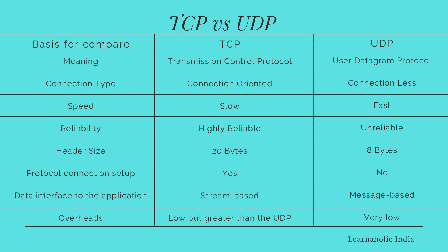Regarding acknowledgement: in TCP, it takes acknowledgement of data and has the ability to retransmit if requested, whereas in UDP it neither takes acknowledgement nor retransmits lost data. For connection setup: TCP is connection-oriented — the connection must be established prior to transmission. UDP is connectionless — data is sent without a setup. The data interface to applications in TCP is stream-based whereas in UDP it is message-based. For retransmission: in TCP, delivery of all data is managed, whereas in UDP it is not performed. For flow control: TCP uses the Sliding Window Protocol, whereas UDP has no provision for flow management.